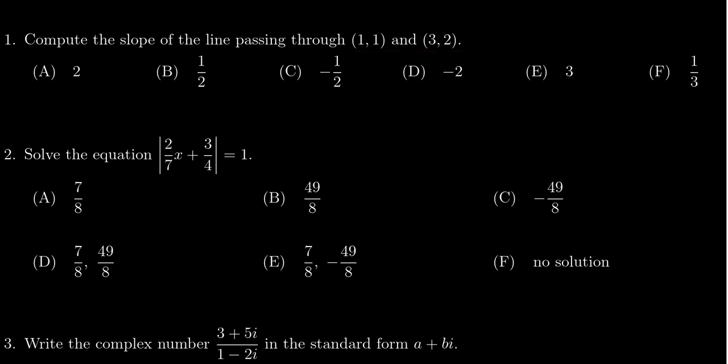We want to use our slope formula: m equals y2 minus y1 over x2 minus x1. It doesn't matter which point is considered the first or second as long as you're consistent.